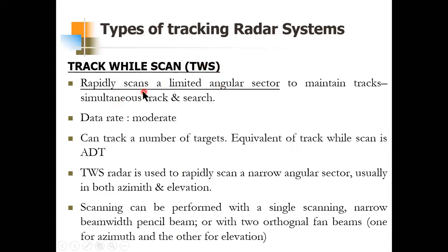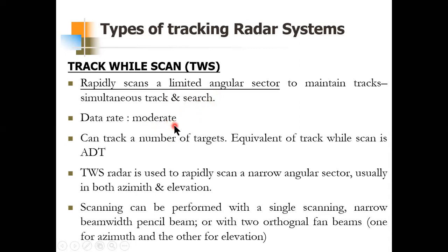The fourth type is Track While Scan (TWS). This radar rapidly scans a limited angular sector to maintain tracks — it simultaneously tracks and scans, but over a limited angular sector. The data rate of TWS is moderate: not as high as STT, and not as low as ADT. It has been used in the past for air defense radar and air landing radars. The term 'track while scan' was applied in the past; the same concept is now referred to as ADT.